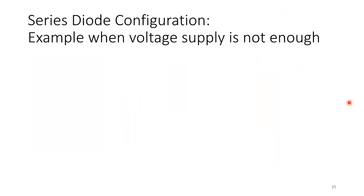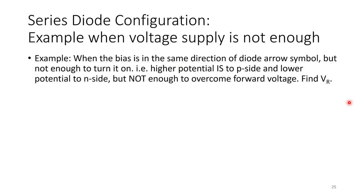Series diode configuration example: when the voltage supply is not enough. This covers the case where the supply is in the direction of forward bias but the value is insufficient to overcome the forward voltage — higher potential is to the P side and lower to the N side, but it's not enough to reach the forward threshold.